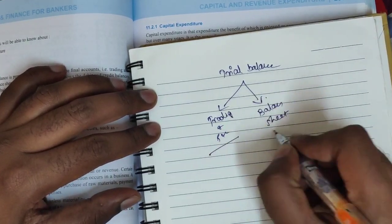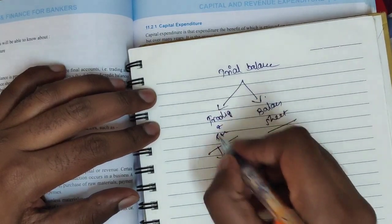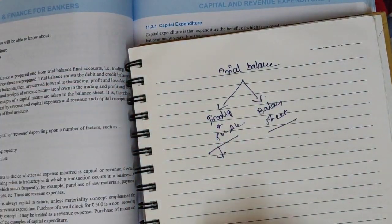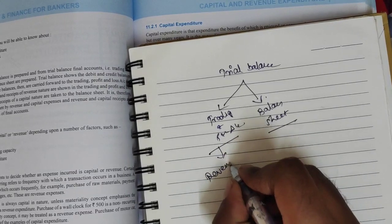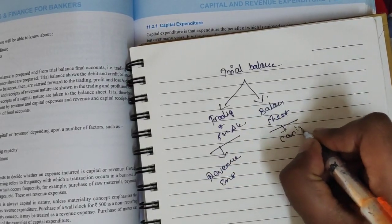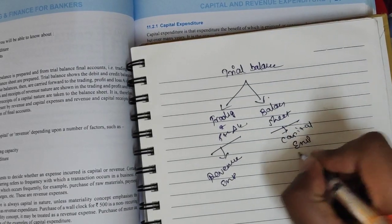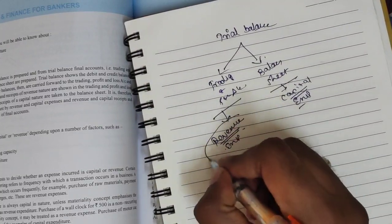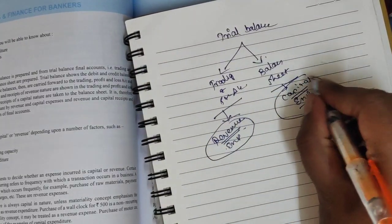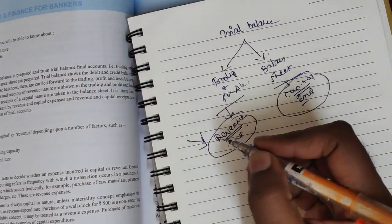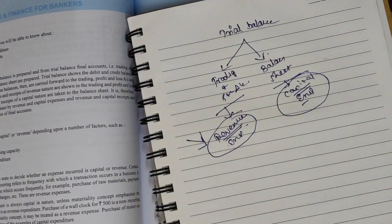In the Trading and Profit and Loss Accounts, what are we doing here? All revenue expenditures and capital expenditures. So these are the two types of expenditures: revenue expenditure and capital expenditure.